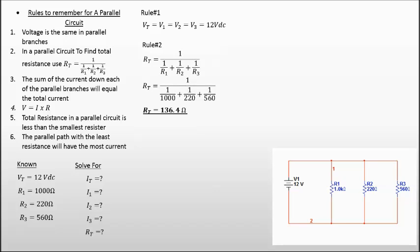So if we look at rule number five, it tells us total resistance in a parallel circuit is less than the smallest resistor. So our answer here for R total satisfies that rule because our smallest resistor is R2 at 220 ohms. So our total is less than that.